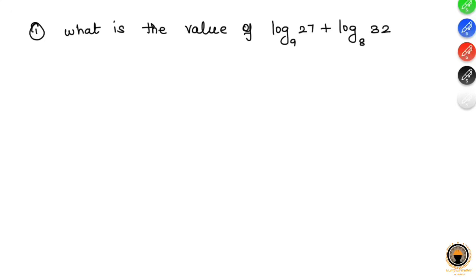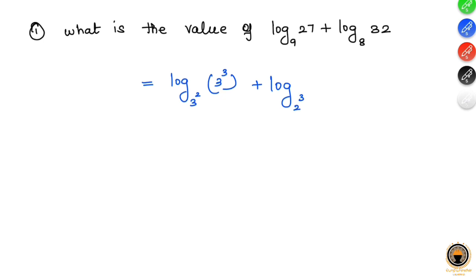The question is: what is the value of log 27 base 9 plus log 32 base 8? First, 9 is 3 squared and 27 is 3 to the power 3. Similarly, base 8 is 2 to the power 3, and 32 is 2 to the power 5.